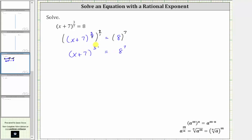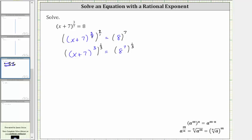So to undo the cubing, we raise both sides to the reciprocal power of three, which is one-third. On the left, we multiply the exponents: three times one-third is three-thirds or one. The left side simplifies to x plus seven.